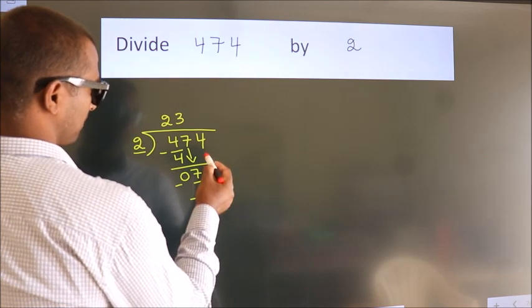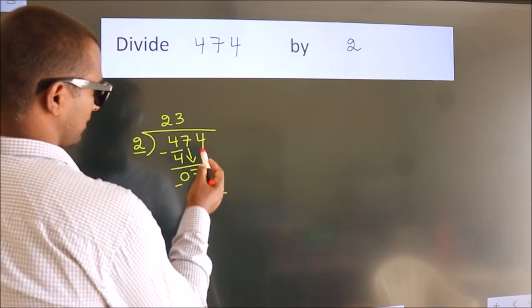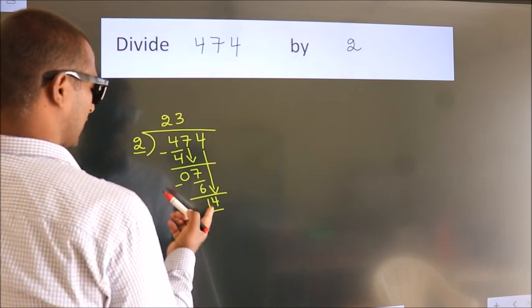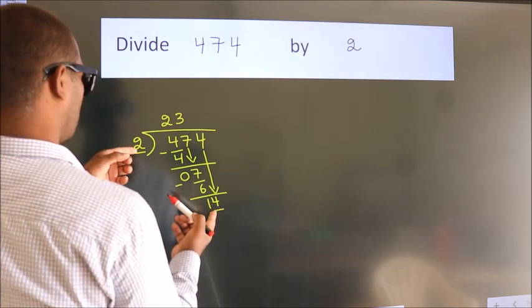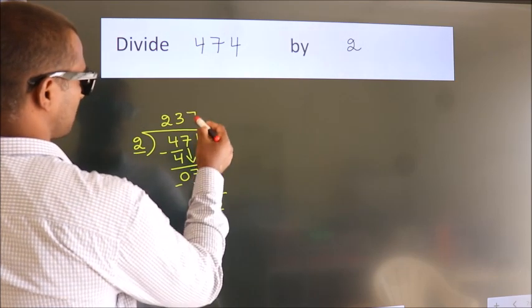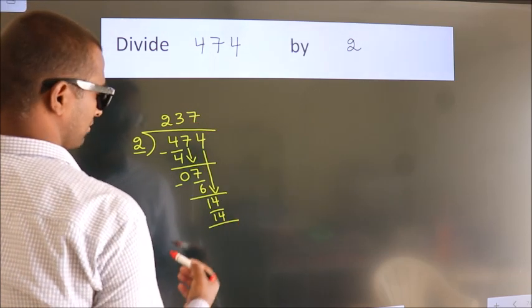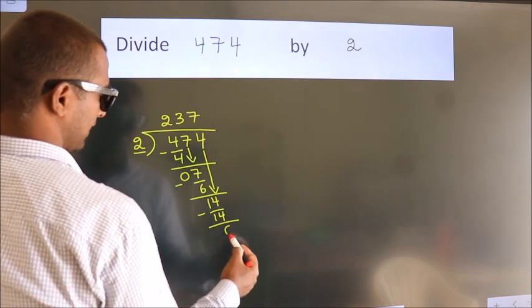After this, bring down the beside number. So 4 down. So 14. When do we get 14? In 2 table, 2 7s, 14. Now we subtract. We get 0.